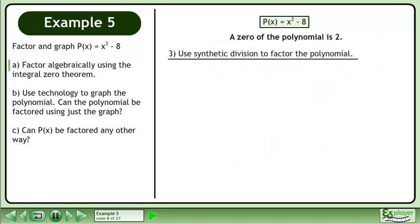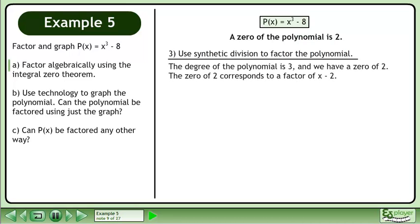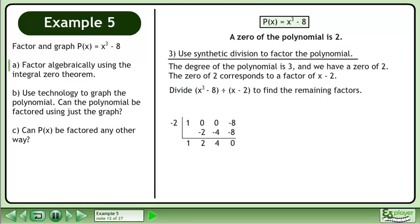Now use synthetic division to factor the polynomial. The degree of the polynomial is 3, and we have a zero of 2. The zero of 2 corresponds to a factor of x - 2. Divide x³ - 8 by x - 2 to find the remaining factors. Set up the synthetic division. Complete the synthetic division.